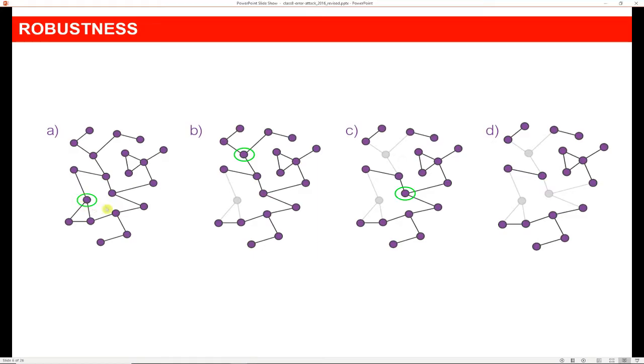Here we have all of the nodes connected and we start to take nodes out of the network and we remove this node. We see that we actually still have everybody connected, but as we start to remove additional nodes, we start to lose the giant component here.